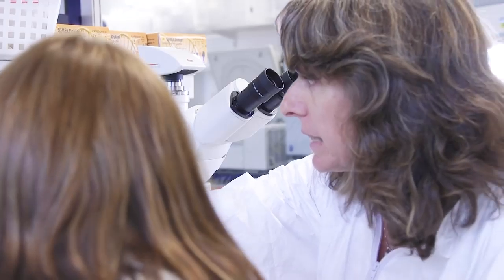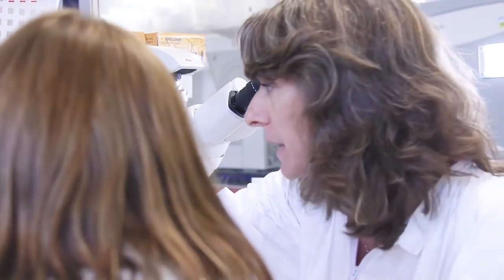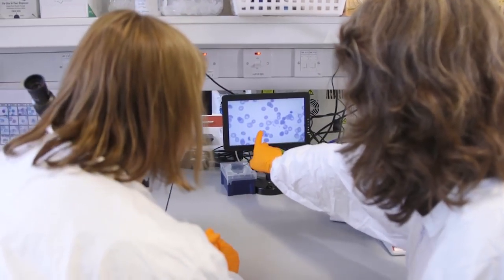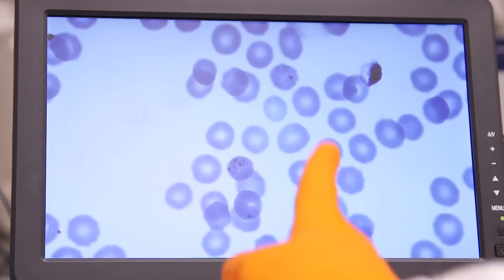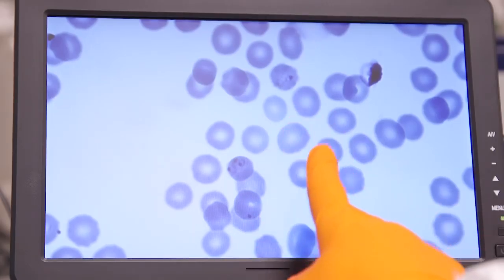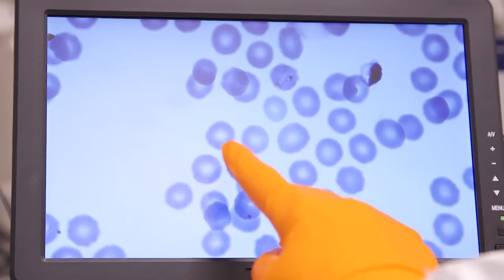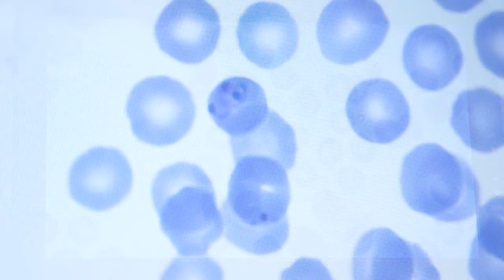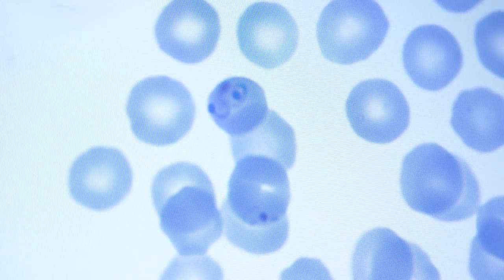On the microscope, we look for the stages of the parasite that are present in the culture. We see the red blood cells in light blue, and within them we can see darker purplish forms of the parasite.